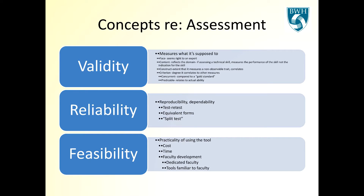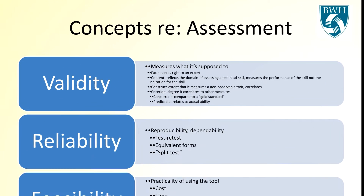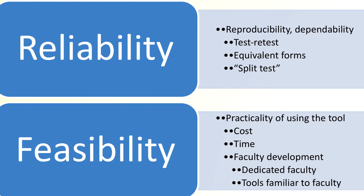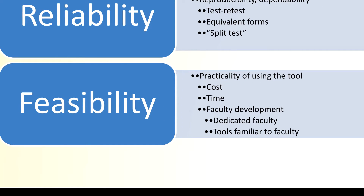Moving on to terms used when talking about assessment tools. It's hard to talk about assessment without talking about validity, reliability, and feasibility. Validity is: does the test measure what it's supposed to measure? This can be broken down into many types. Reliability is: is the test reproducible — if you gave the same test to the same learner over and over again, will they get the same results? Feasibility, often underestimated in the complex clinical environment, asks whether these tools are actually practical, cost effective, and how much faculty development is required to make them useful.